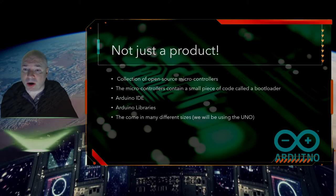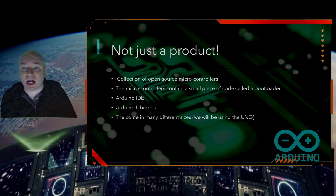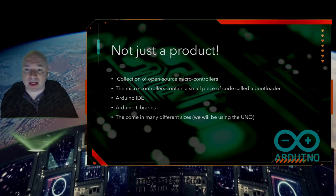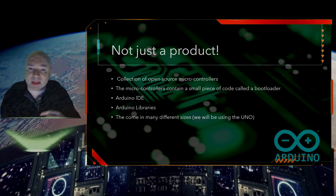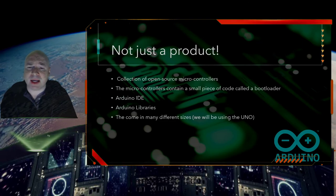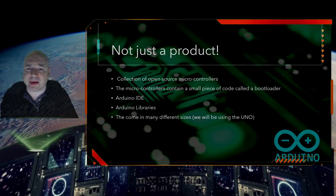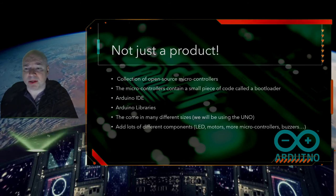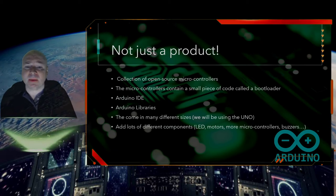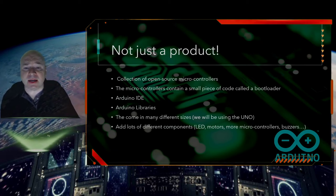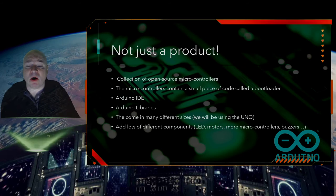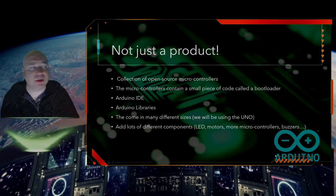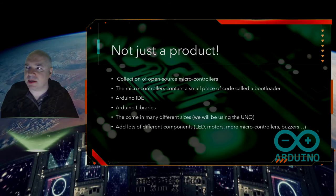These Arduino boards also come in all different kinds of sizes — medium size, large size, some as small as my thumb. You can include them in all different kinds of projects, from lighting up Christmas lights to controlling heat sensors on refrigeration devices to creating buttons that can order things on Amazon. We can add LEDs and motors to build robots, and even add more microcontrollers, buzzers, and Bluetooth devices to create a really awesome experience.